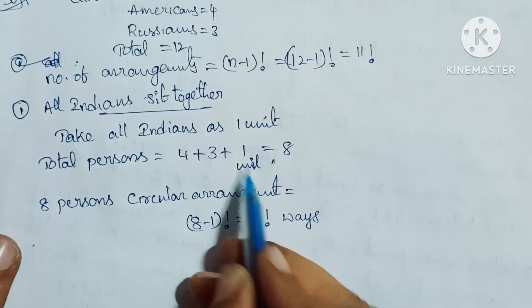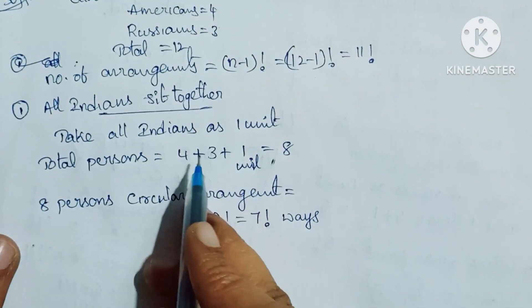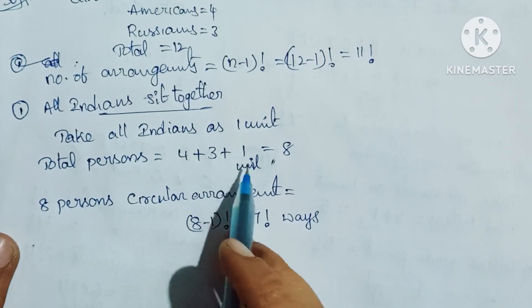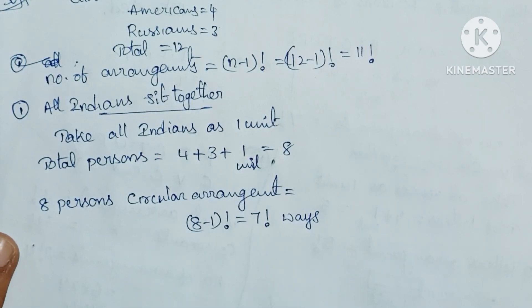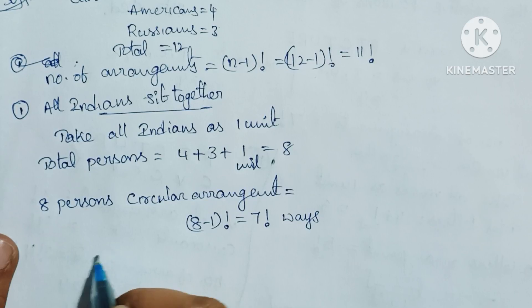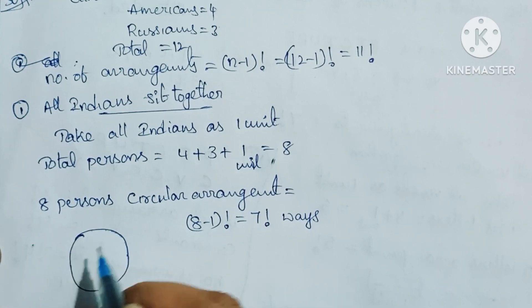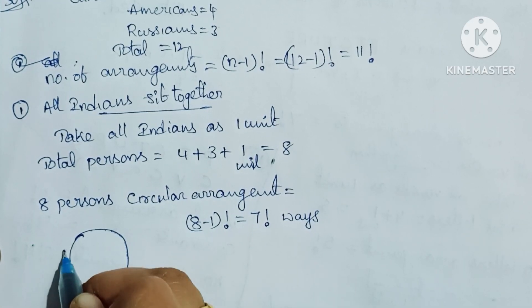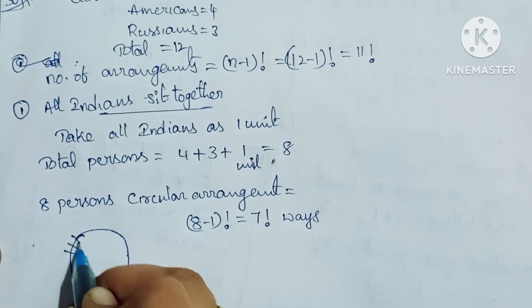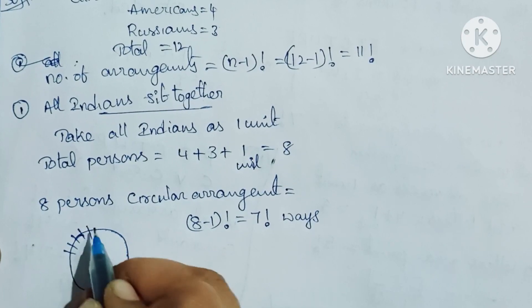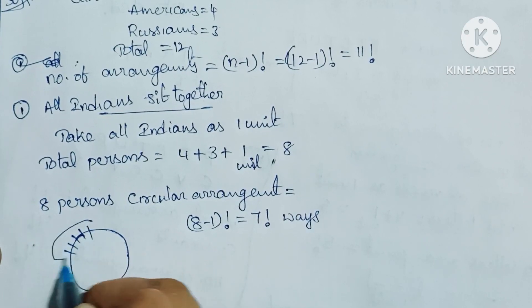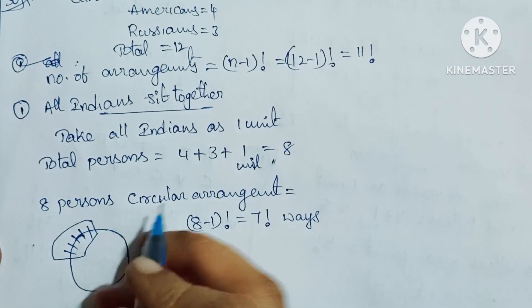For the internal arrangement within the Indians unit: the 5 Indians occupy 5 places internally, and they can be arranged in 5 factorial ways.